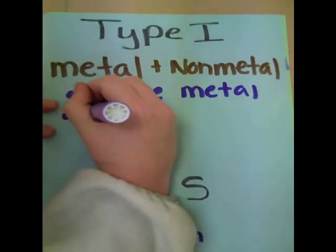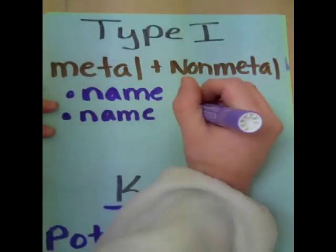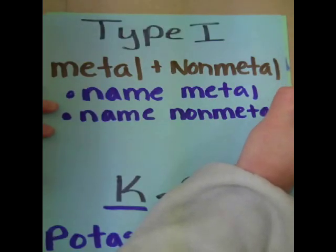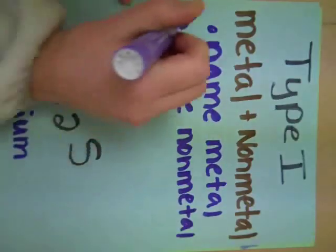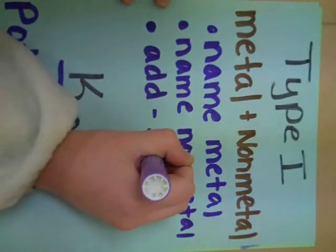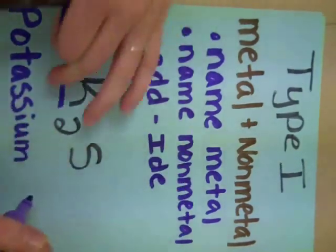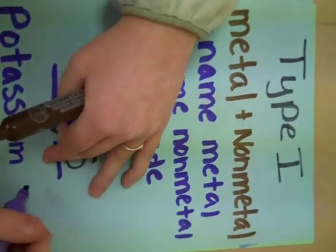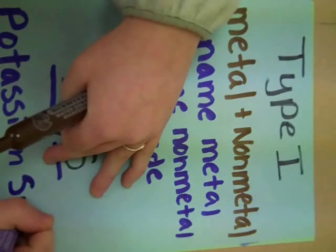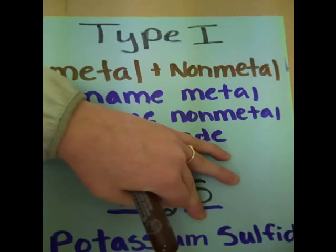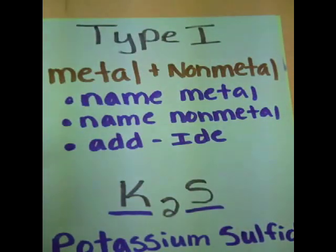Then you name your non-metal while adding the -IDE ending. In this case it's sulfur, and adding the -IDE ending gives sulfide. And there you go — that's your type 1s.